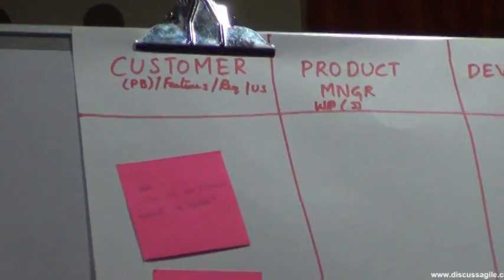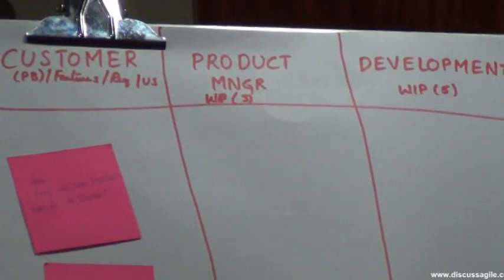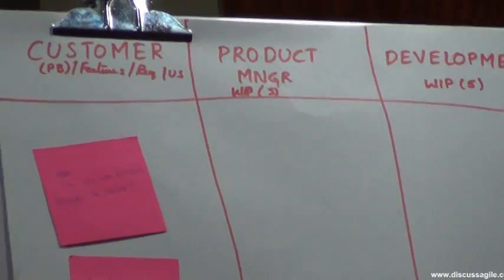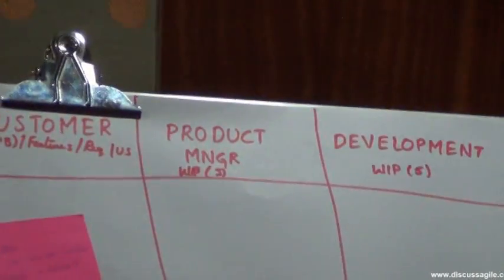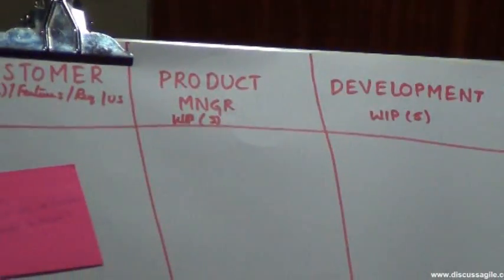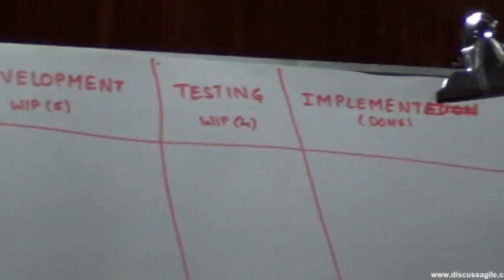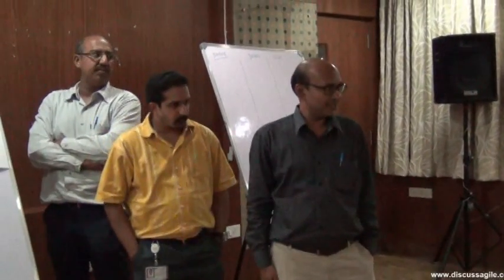After that it goes to the product manager and the product manager will be interacting with the development manager, because the development manager is aware of the different teams, not the product manager. By discussing together, the product manager and project manager will allocate things to the development team. Then as usual, testing and implementation - that is the process which was followed in my earlier development organization.